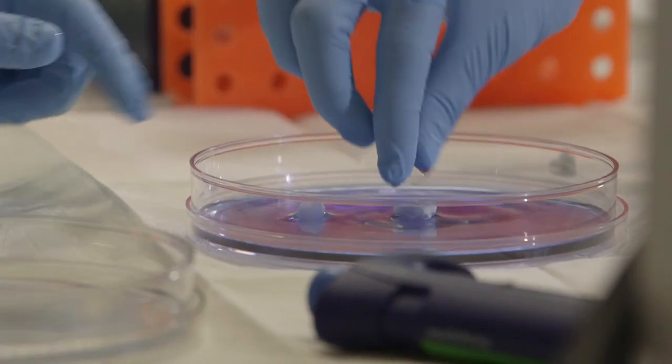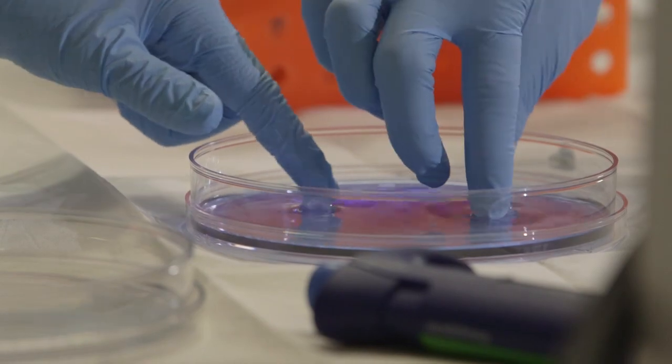And by the time the sponge is no longer needed, it's harmlessly decayed. When you're all done, it essentially disappears. It turns into amino acids, which are the normal content of your matrix and cells in the body anyway.